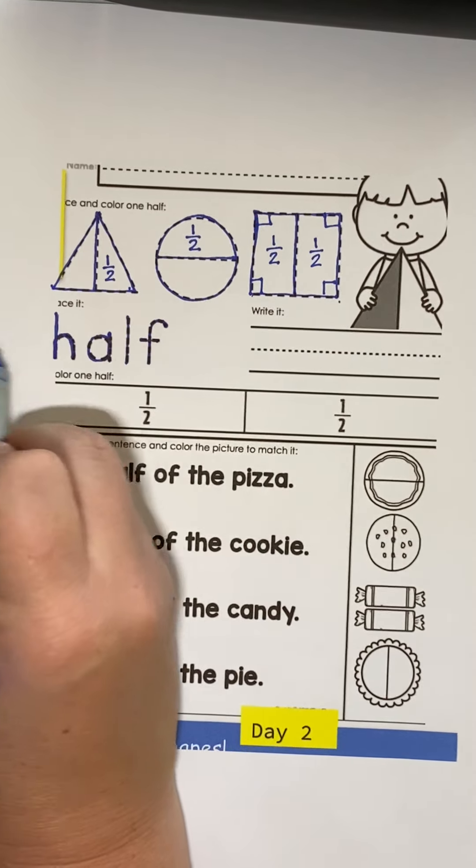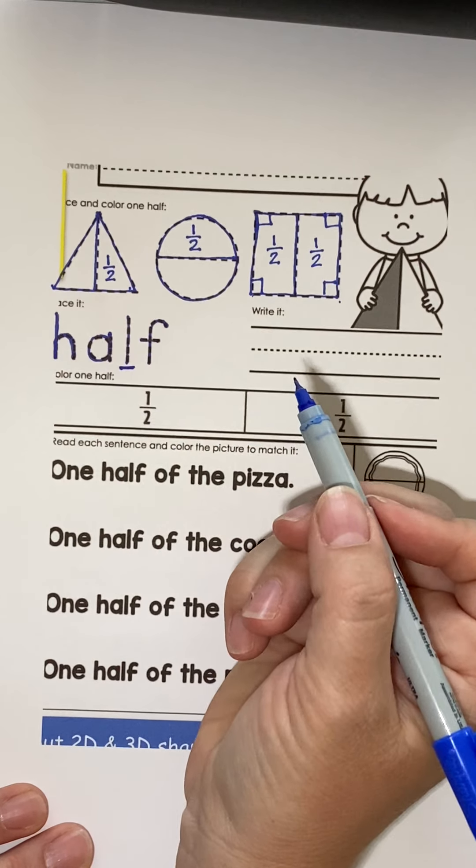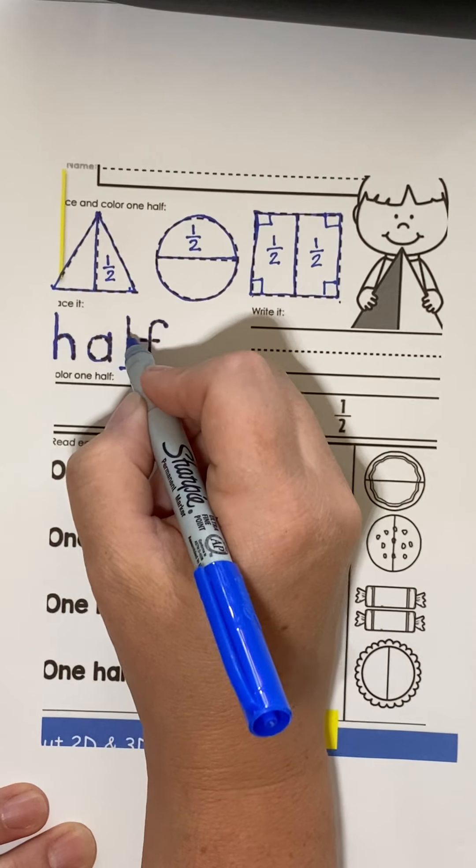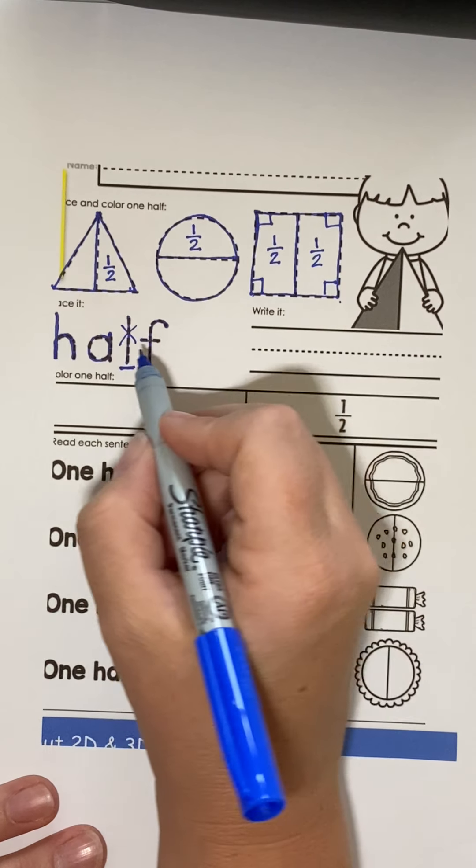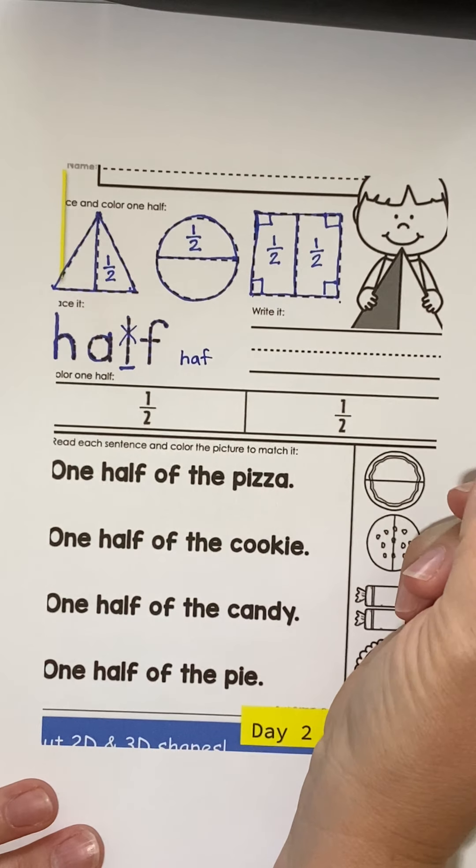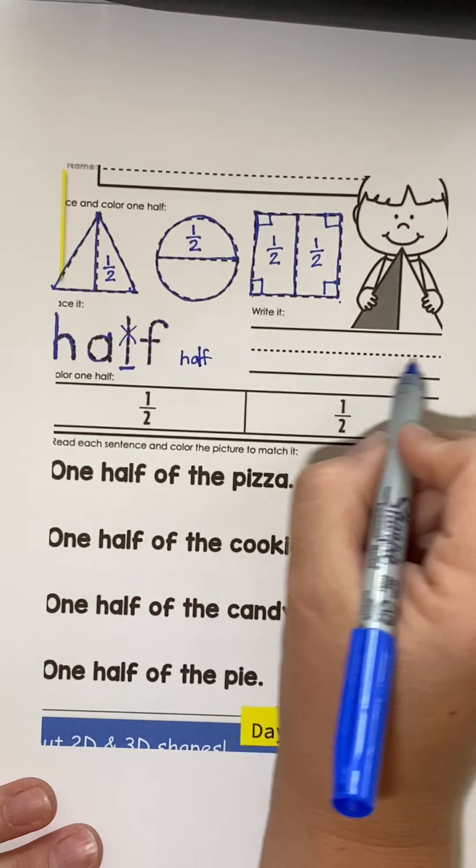Now, when we read this word, it looks like it's saying half, with an L sound. But the L sound is quiet. We do not say that sound. It's like writing H, A, F, half. But there is an L in the word. Let's write half.